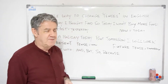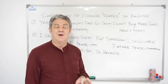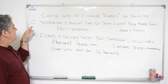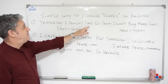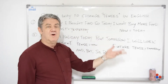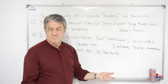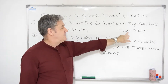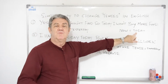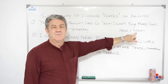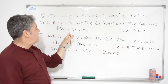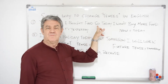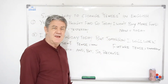So let's look at a couple of sentences to help you understand this. Sentence number one: 'Yesterday I bought food, so today I won't buy more food.' Pretty obvious. Yesterday was the past, and today is present time. So we went from the past to today using 'so'.